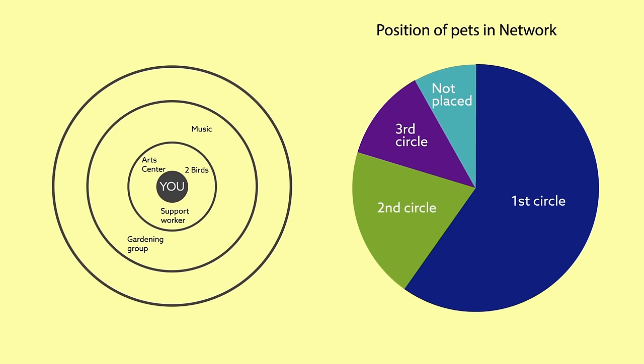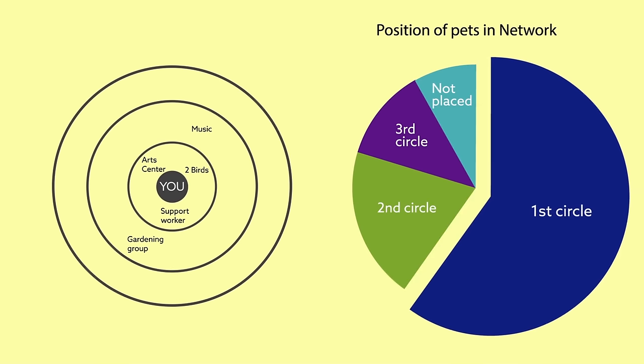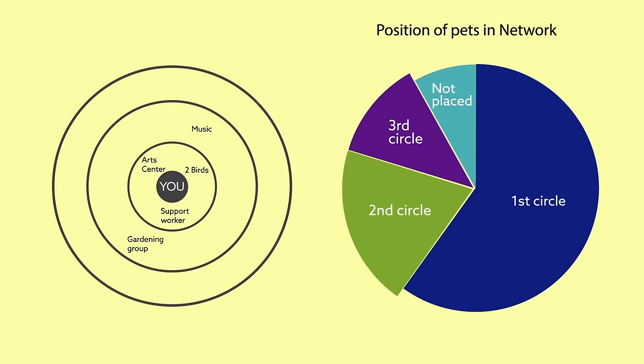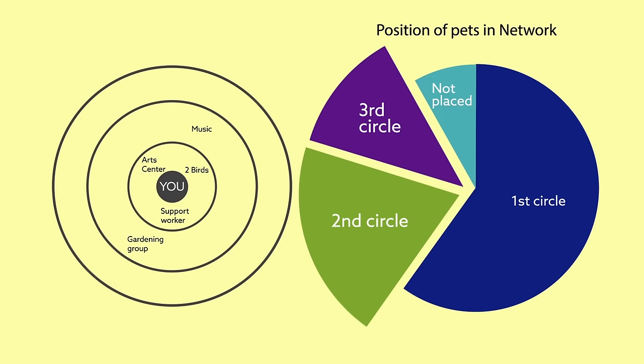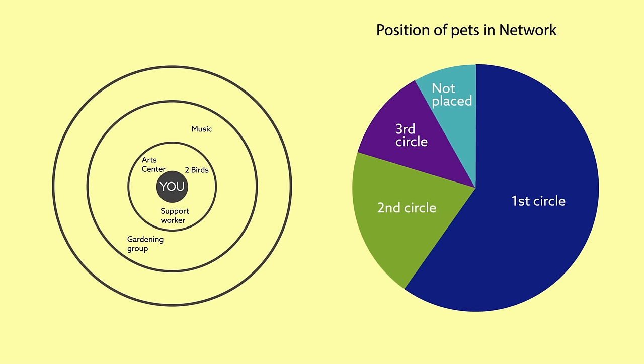Of the pet owners, the majority put their animals in the most central circle. Some people, usually those who had good relationships with other people, listed their pet in a more secondary role, but most participants reported difficulty with other people, and their animals were a main source of support.